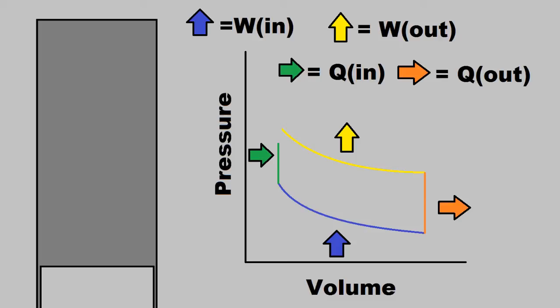During the constant volume heat addition, heat is added. And finally, during the constant volume heat rejection, heat is taken out of the system.